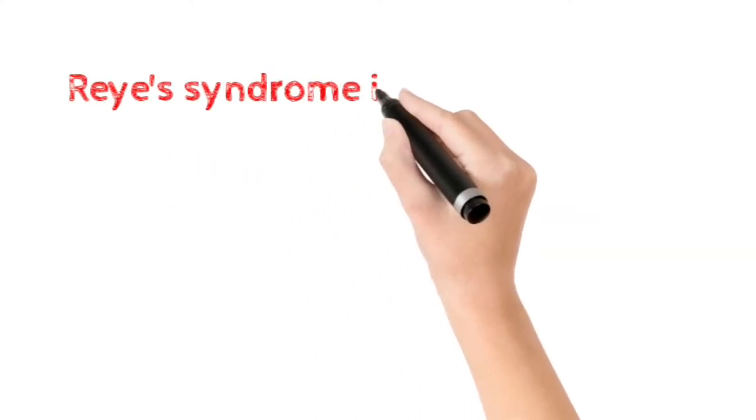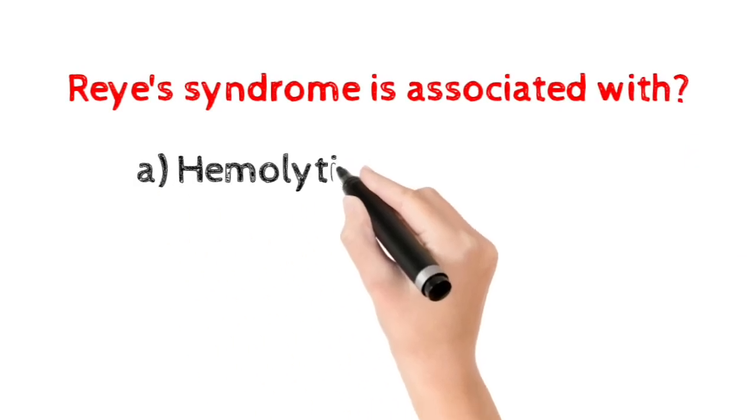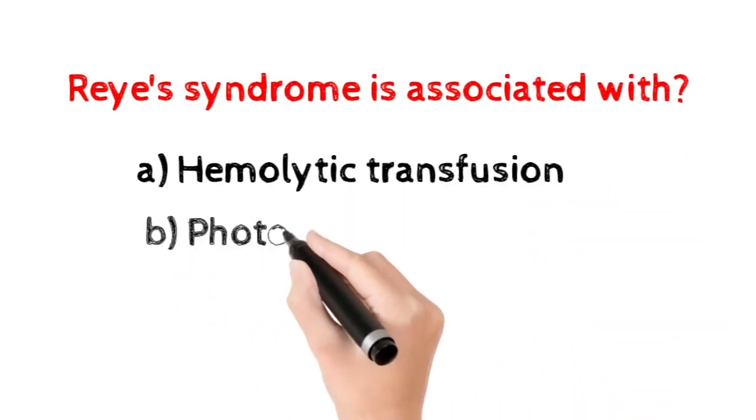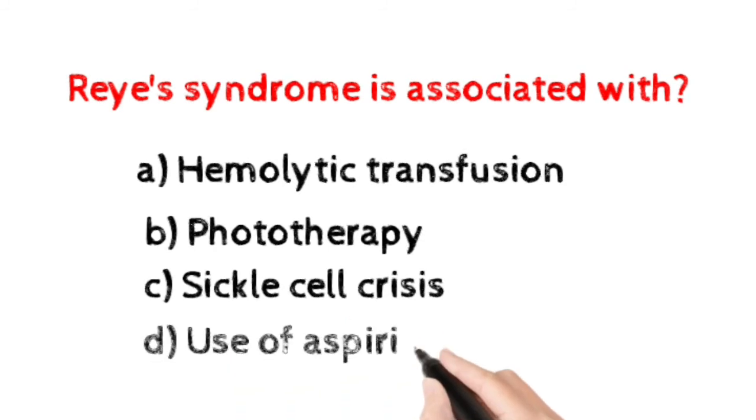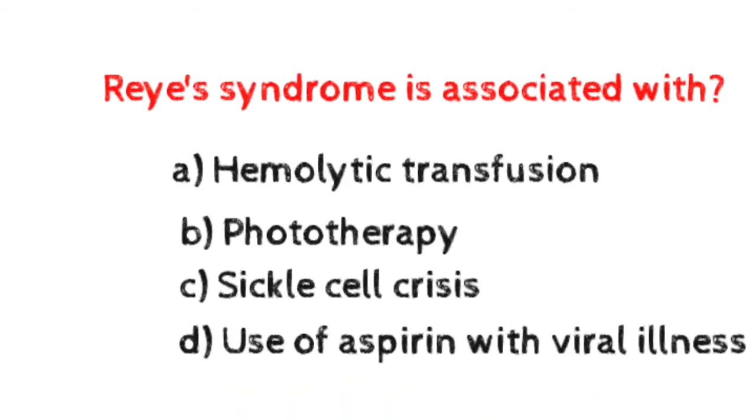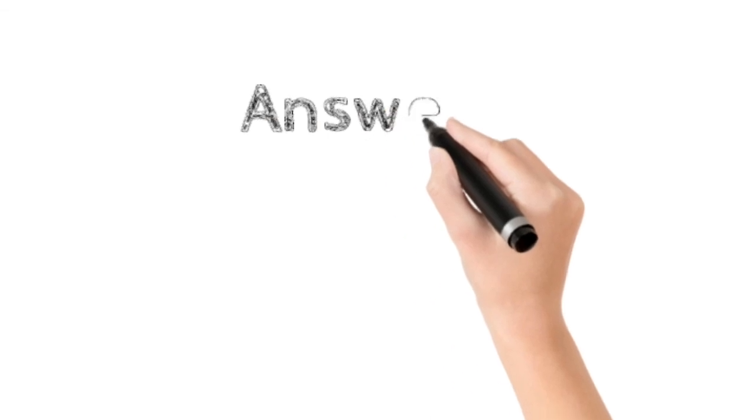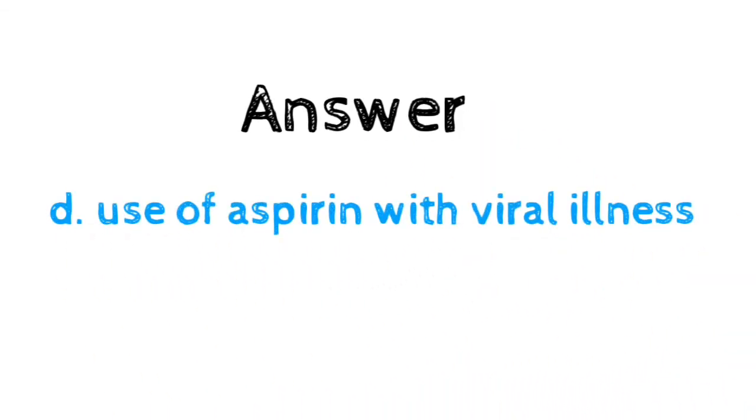Number fifteen: Reye's syndrome is associated with? Option A: hemolytic transfusion. Option B: phototherapy. Option C: sickle cell crisis. Option D: use of aspirin with viral illness. The correct answer is option D, use of aspirin for patients with viral illness.